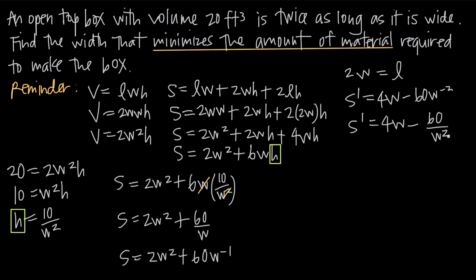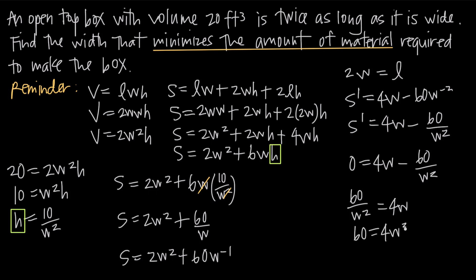Our next step is to find critical points by setting the derivative equal to zero: 0 = 4w − 60/w². Adding 60/w² to both sides gives 60/w² = 4w. Multiplying both sides by w² gives 60 = 4w³. Dividing by 4 gives 15 = w³. Taking the cube root of both sides: w = ∛15 ≈ 2.466.